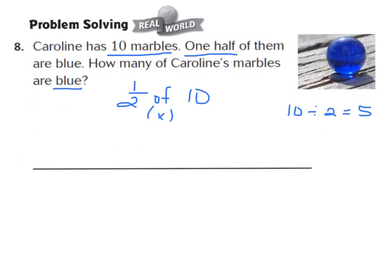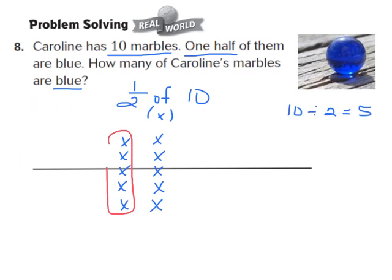So I draw my array: here's one group of 1, 2, 3, 4, 5, and here's our second group of 1, 2, 3, 4, 5 — two equal groups with 5 in each group. Now using the numerator, which is 1, I circle one of those equal groups. I count the circled X's: 1, 2, 3, 4, 5. So 1/2 of 10 equals 5. I write the 5 down as my answer — Caroline had 5 blue marbles.